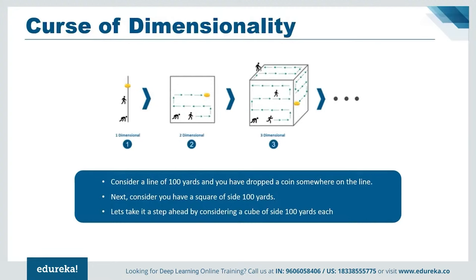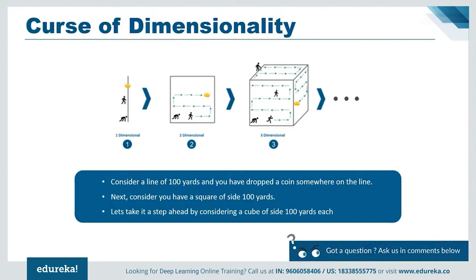Machine learning was not capable of solving these high-dimensional use cases. The second major challenge is telling the computer what features to look for that will play an important role in predicting the outcome — a process referred to as feature extraction. Feeding raw data to the algorithm rarely ever works, which is why feature extraction is a critical part of the traditional machine learning workflow. Without feature extraction, the challenge for programmers increases, as the effectiveness of the algorithm depends on how insightful the programmer is. Hence, it is very difficult to apply machine learning models to complex problems like object detection, handwriting recognition, and image processing.